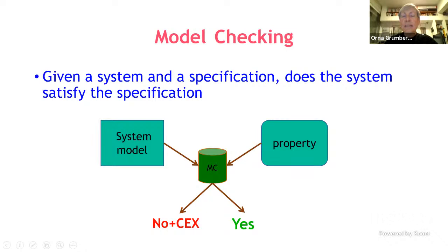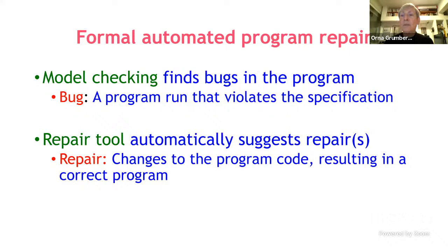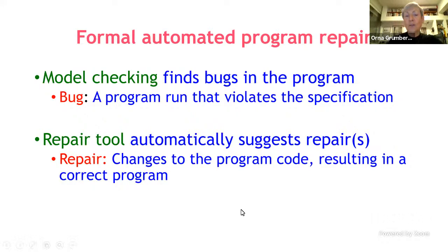Thank you for the introduction, Peter. I will be talking about automated program repair using formal verification techniques. This consists of two different works that I will describe separately. One of the building blocks we count on is model checking, which is the tool for verification. Model checking receives a system — a model of the system — and a specification, and checks whether the system satisfies the specification. It answers both yes, if the system satisfies the specification, and no plus counter-example otherwise. The counter-example is very useful, especially when our goal is to repair a program.